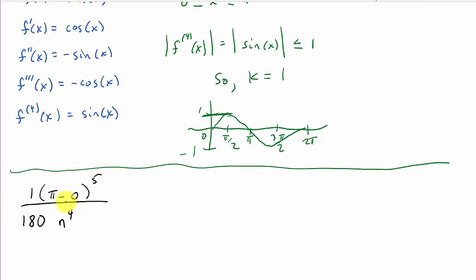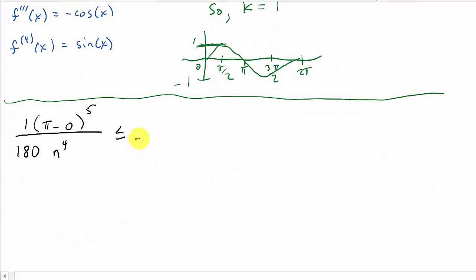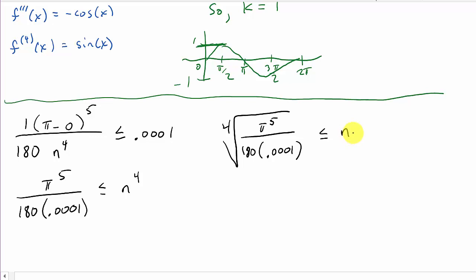Okay, so now we want this to be less than or equal to 0.0001. So we've got 0.0001, and now all we do is solve for n. So the n comes up here, the 0.0001 comes to the denominator. Well, this in the numerator, that's going to be π^5 over 180 times 0.0001 less than or equal to n^4. And so now I'll take the fourth root of both sides. That's the fourth root of π^5 over 180 times 0.0001 less than or equal to n. So I get n is greater than or equal to the fourth root of this. So that comes out to be 11.4, and I will take n to be 12.